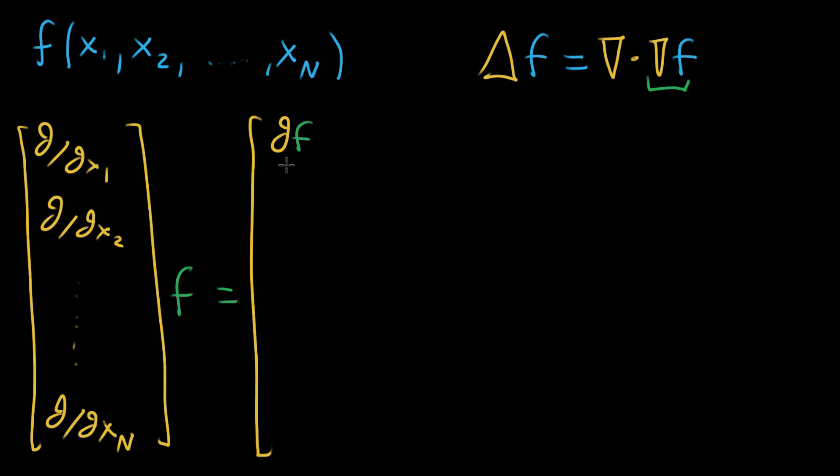So what you end up getting is all the different partial derivatives of f, right? It's partial of f with respect to the first variable, and then on and on, up until you get the partial derivative of f with respect to that last variable, x sub n.